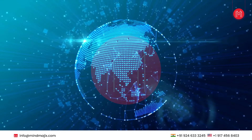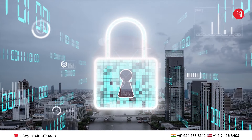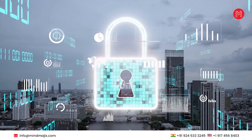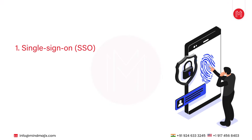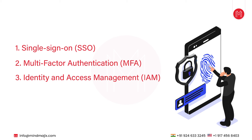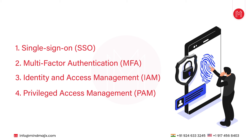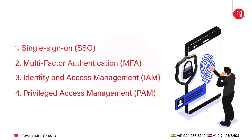In today's interconnected world, organizations are increasingly dependent on secure authentication and access management systems to protect sensitive data and user identities. Various technologies like single sign-on or SSO, multi-factor authentication or MFA, identity and access management or IAM, and privileged access management or PAM play crucial roles in achieving secure and efficient identity control. In this video, we will break down the essential differences between SSO, MFA, IAM, and PAM, helping you understand how each serves to enhance security in the digital landscape.